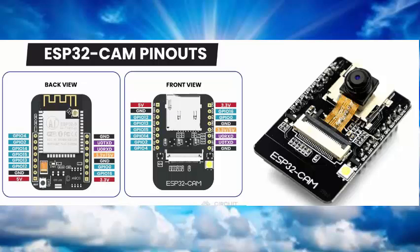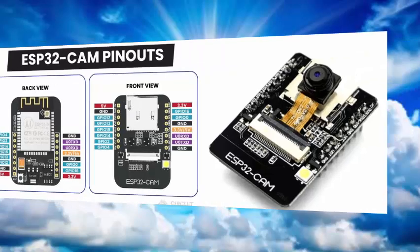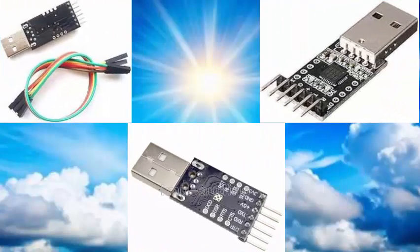With its superior performance and diverse features, ESP32CAM has become the module of choice for many developers and engineers implementing efficient image processing and remote monitoring solutions. The CP2102 USB module is a USB to serial converter widely used for interfacing microcontrollers, development boards, and other devices with a computer via a USB port. It is based on the Silicon Labs CP2102 chip and is popular due to its simplicity, affordability, and compatibility with various platforms.